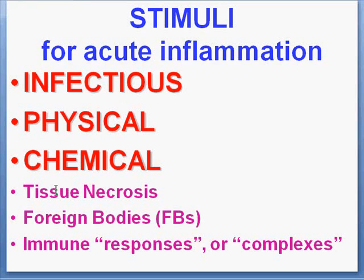Tissue necrosis in itself is a stimulus for acute inflammation. Foreign bodies are also a stimulus. And if the agents that cause acute inflammation are intrinsic to normal body antigens or normal body substances, this is frequently called immune or autoimmune diseases.